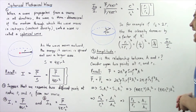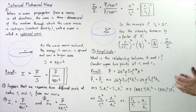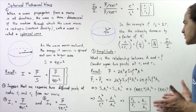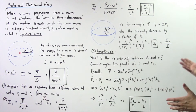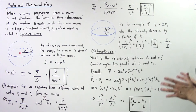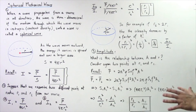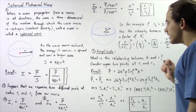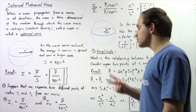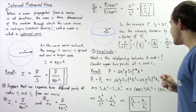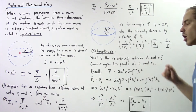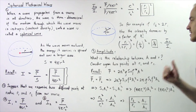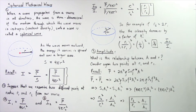Now, what about the amplitude? What is the relationship between amplitude and the radius of a spherical wave? Let's consider two points: the first point has a radius of R1 and the second has a radius of R2.